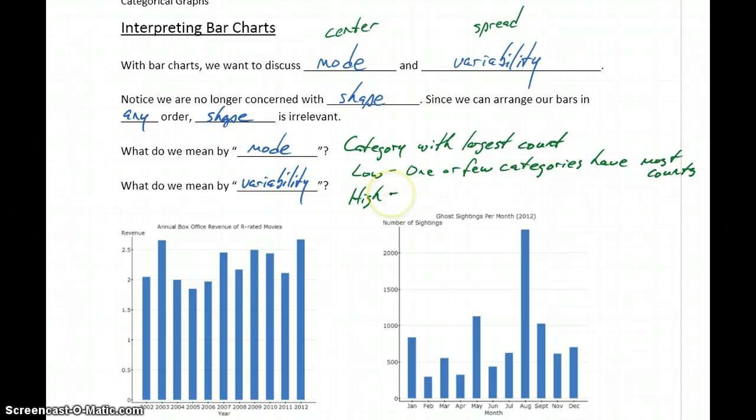Or we can have high variability, which means that the counts are evenly distributed. And I put that evenly in quotation marks because it doesn't have to be exactly even, but what we're saying is that the counts are more or less distributed across all of the different categories.